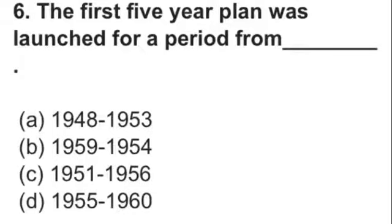The first 5 Year Plan was launched for a period from — easiest question ever. 1950 में Planning Commission बनी थी, First 5 Year Plan 1951 में था. तो आपको बताना है what is the duration of that? Option A है 1948-53, B है 1951-56 — practically not possible वाले options को छोड़ें. So this you have to tell in the comment section.